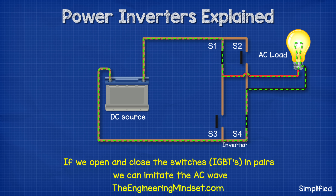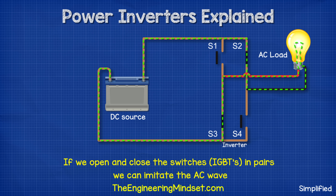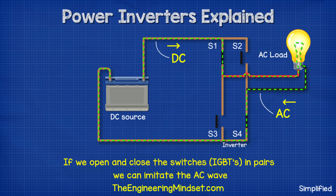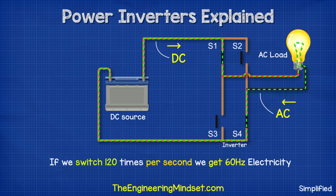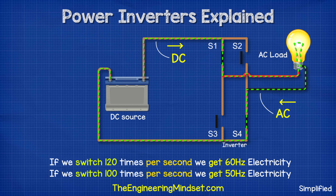So if we were to close switches one and four, then the current flows in one direction. And if we then open these and close switches two and three, we get current flowing in the other direction. We can use the controller to automatically do this again and again. If we did that 120 times per second, then we would get 60 hertz electricity. And if we did that 100 times per second, then we would get 50 hertz electricity.